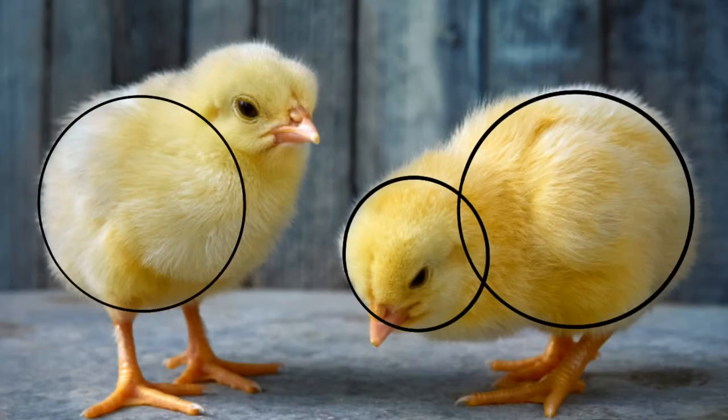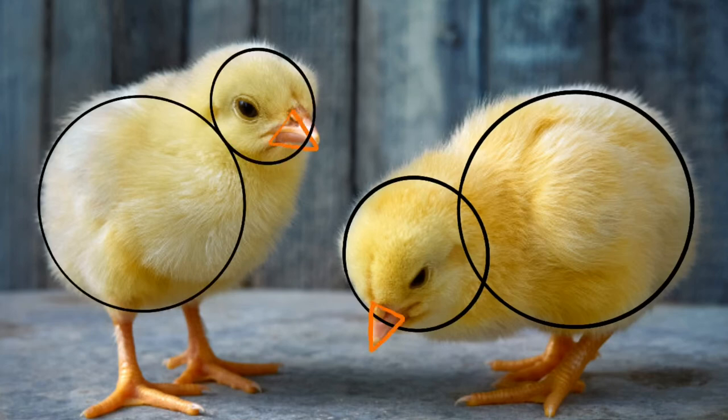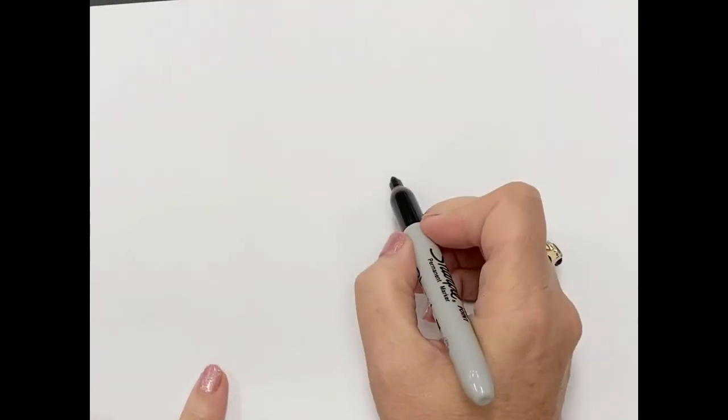You know what? Chicks are really just geometric shapes too. One big circle, one smaller circle, and a triangle. All right, do you want to try to draw one? Let's go.